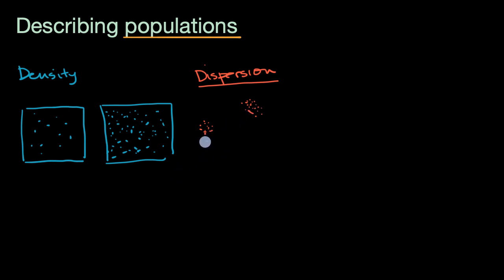One example is a school of fish — they like to go together, which can confuse predators. There are more eyes collectively looking for food or to avoid becoming someone else's food. This is clumped dispersion.